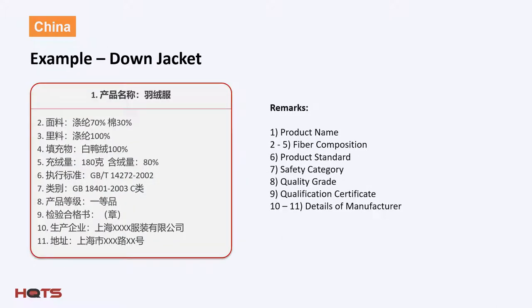For example, let's look at the labeling for a down jacket, which is fairly typical. As required under Chinese law, it must be labeled in simplified Mandarin Chinese text. The first item is the product name; items two through five indicate the various fiber composition; six is the product standard; seven is the safety category; eight is the quality grade; nine is the qualification certificate information; and items ten through eleven show the details of the manufacturer.